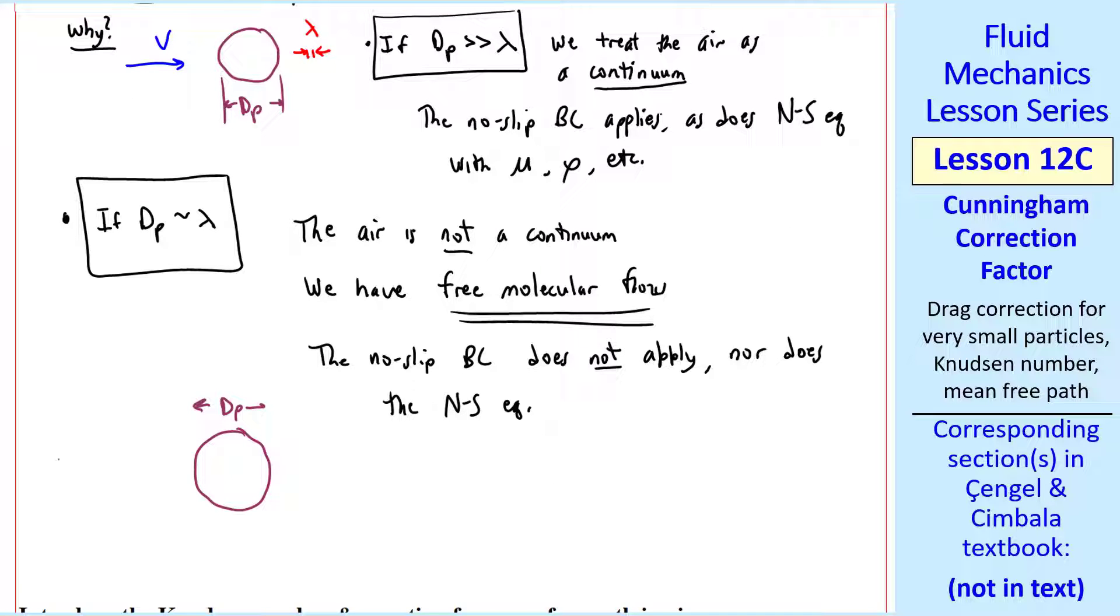Again, we have a particle of dimension dp with some average speed v approaching. But now we must consider individual air particles, or air molecules, that have somewhat random velocities. And some of these air molecules hit the particle and bounce off.